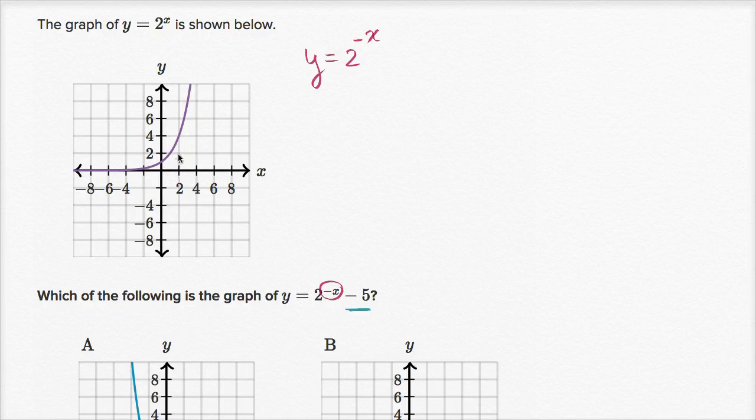And so what we're essentially going to do is flip this graph over the y-axis. So here we have the point two comma four. Over here we're going to have the point negative two comma four. When x is zero, they're going to give us the same value, so they're both going to have the same y-intercept.